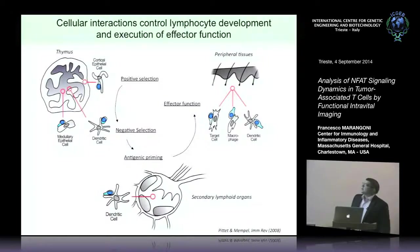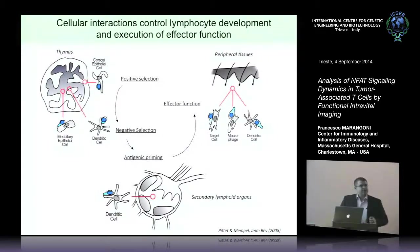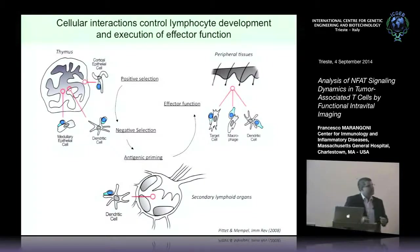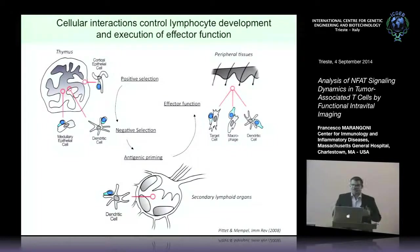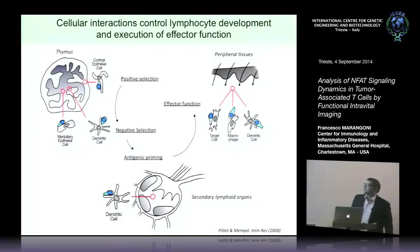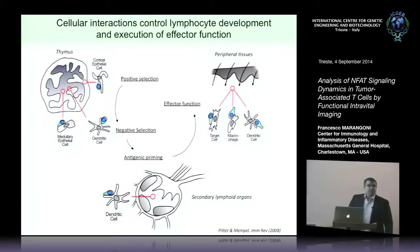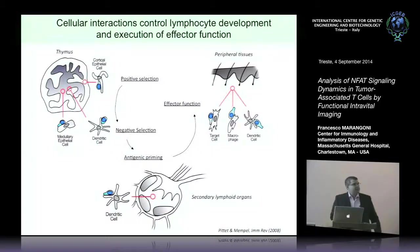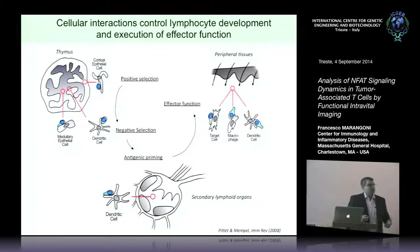We are particularly interested in analyzing the interactions between antigen-presenting cells and T cells that govern T cell ontogeny, their priming in secondary lymphoid organs, and also their function in peripheral organs. Especially today, I will tell you about a specific type of peripheral tissue, which is the tumor tissue.